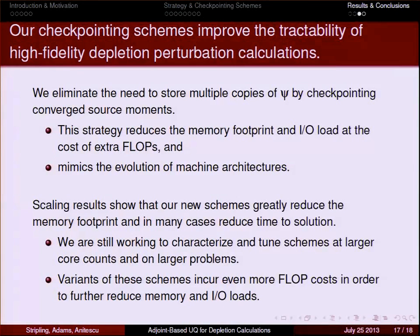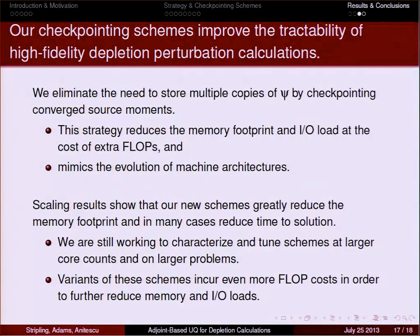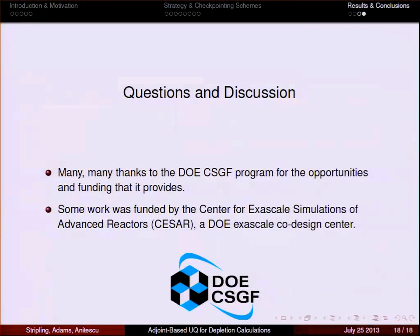To summarize: we eliminate the need to store many copies of psi — scaling with the recompute chunk size — by checkpointing the converged source moments instead, reducing the memory footprint of the algorithm at the cost of extra flops, which is acceptable given the direction hardware is heading. The scaling results show we don't impact the time to solution; essentially we can get a bigger problem on the machine. In nuclear engineering, more unknowns per processor generally yields better time to solution. I'd be happy to take questions, and I want to thank the CSGF program for opening doors and leading me down a path I didn't know existed. Some of the funding came from the Caesar Center, an exascale center funded by DOE.